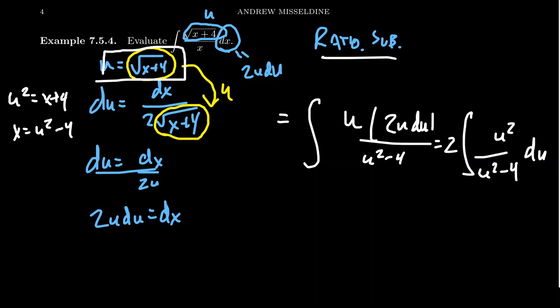This is where the name 'rationalizing substitution' comes from. We made a substitution involving a square root — an irrational expression — and after the substitution the square root is gone, so we've rationalized the fraction. More importantly, the substitution turns the function into a rational function, for which we can then use partial fraction decomposition. We now have u² / (u² − 4).